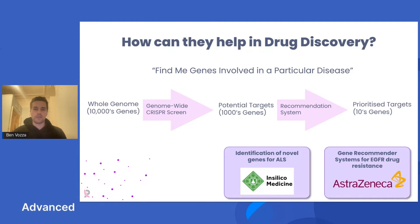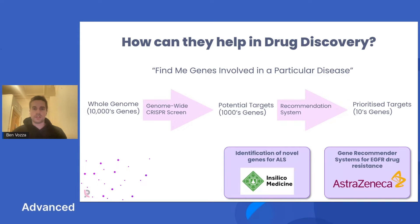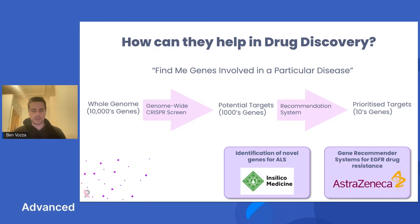This is where recommendation systems can really be beneficial in drug discovery, because those biological, clinical, commercial, and other features can be used to prioritize and rank those genes — getting you down to a shortlist of 20, 30, or 40 genes, where a scientist can then review those genes, saving months of time and not having to review thousands of genes.